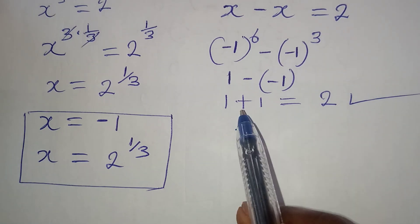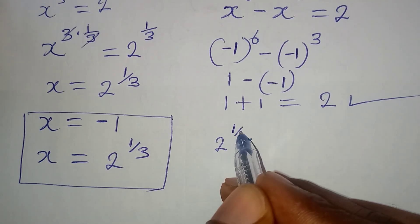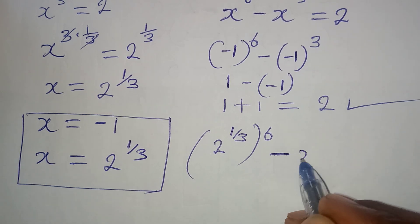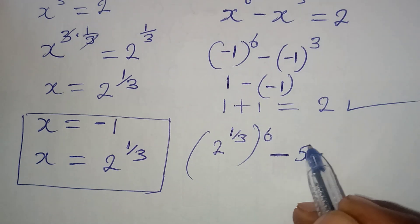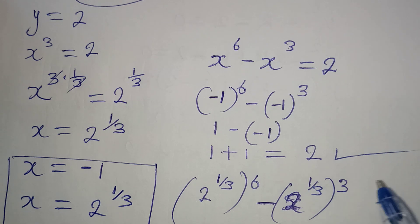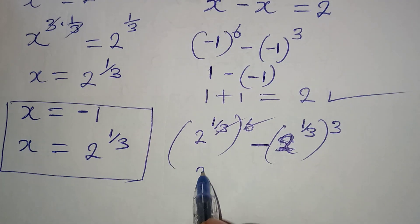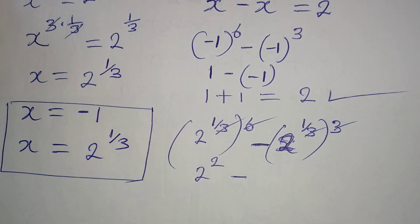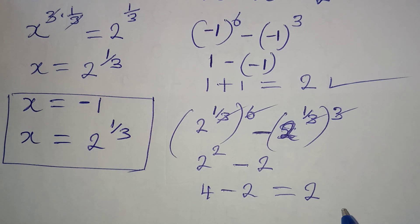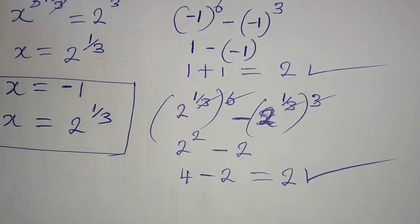Now let's verify x equals 2 to the power of 1 over 3. In place of x I write 2 to the power of 1 over 3 raised to the power of 6, minus 2 to the power of 1 over 3 raised to the power of 3. The 1/3 times 6 gives power of 2, so we get 2 squared. The 1/3 times 3 cancels, leaving just 2. So we have 4 minus 2, which gives 2. That is the value in the equation, so both real values x equals minus 1 and x equals 2 to the power of 1 over 3 are confirmed correct. Thank you for watching.